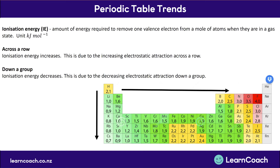It relates quite a lot to electronegativity. For example, fluorine does not like to give up its electrons easily, so you're going to have to put in a lot of energy to make fluorine release its electron. As we go across, ionization energy increases because of increased electronegativity. As we go down, ionization energy decreases because the electronegativity is decreasing.